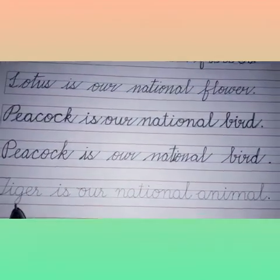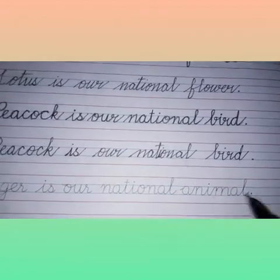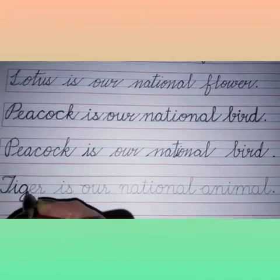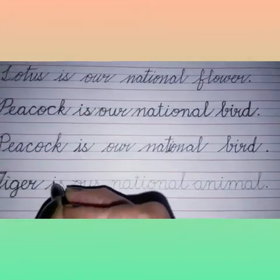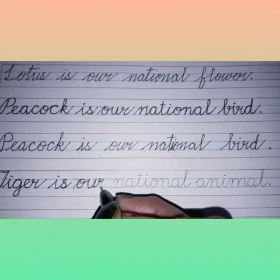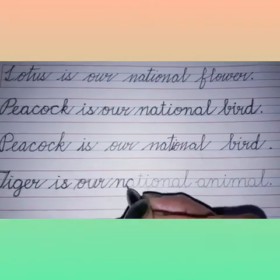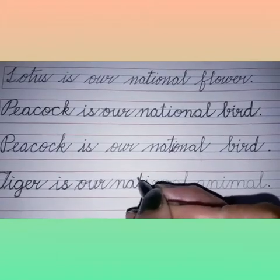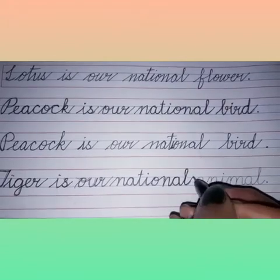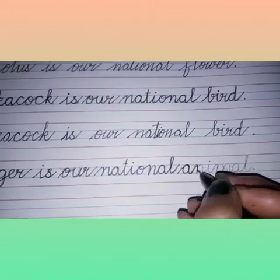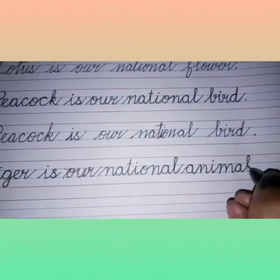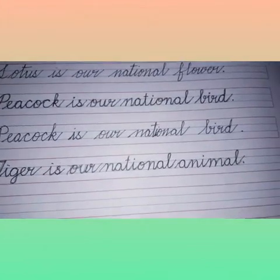Now our next sentence is: Tiger is our national animal. So start tracing: T-I-G-E-R, Tiger, N-A-T-I-O-N-A-L, National, animal. Tiger is our national animal.